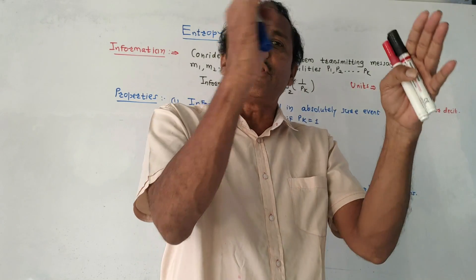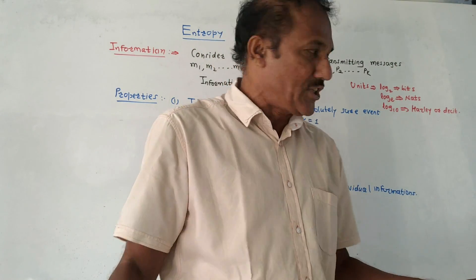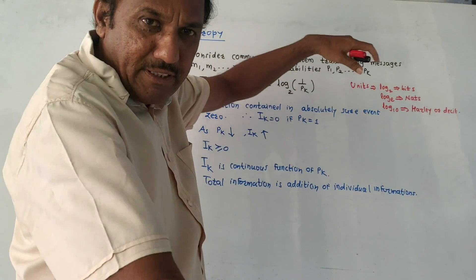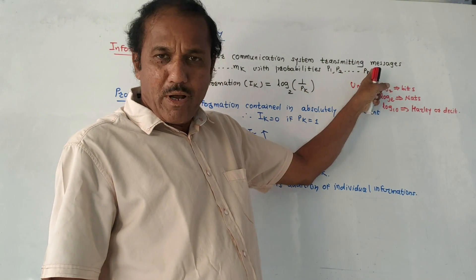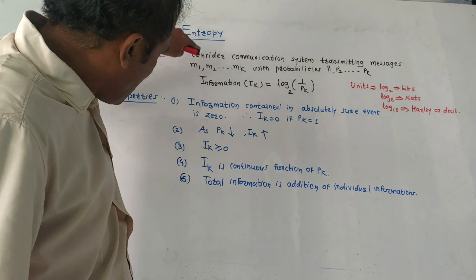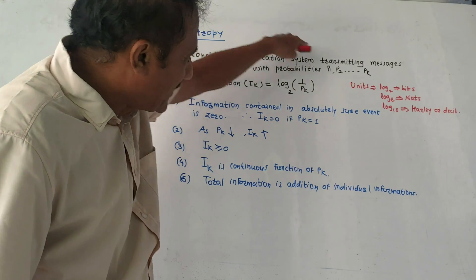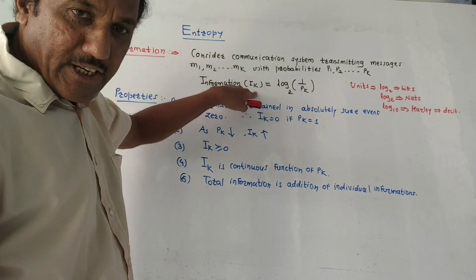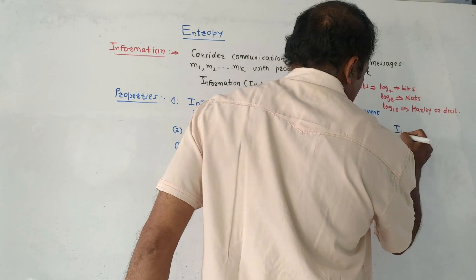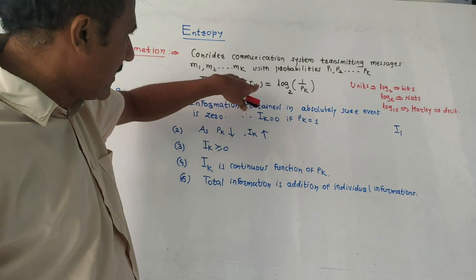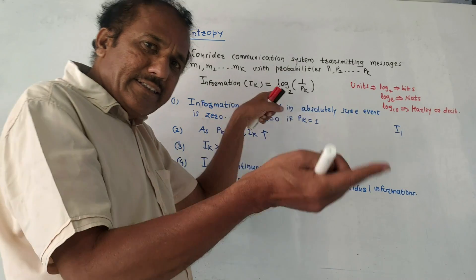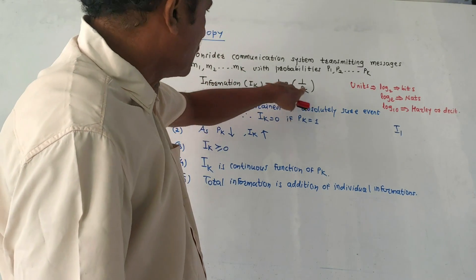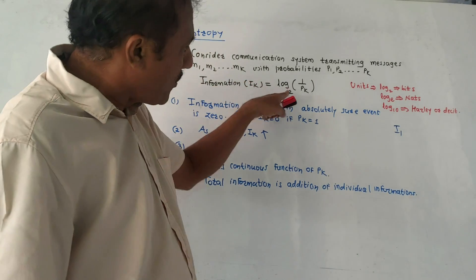Consider a communication system transmitting messages m1, m2, up to mk, with probabilities p1, p2, up to pk respectively. Information is denoted by I_k — the information related to the kth message. The information contained in message mk is given by I_k = log(1/p_k), where the base of the logarithm is 2.